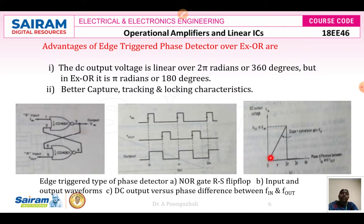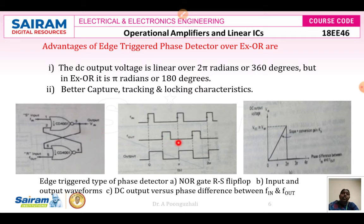In the edge-triggered case, we have a linear slope for 2-pi radians, and the maximum saturation occurs at 2-pi radians. The DC output voltage is linear over 2-pi radians (360 degrees), whereas in the exclusive-OR detector it is linear over only pi radians (180 degrees). The advantage of the edge-triggered detector is that it has a better capture range because the DC output voltage is linear over 2-pi radians, giving better capture, tracking, and locking characteristics.